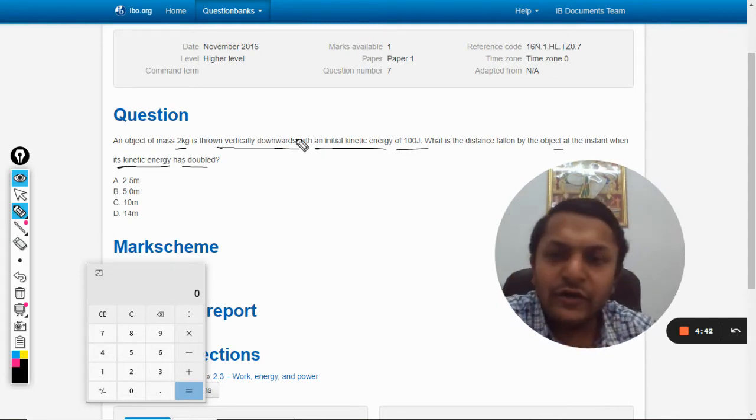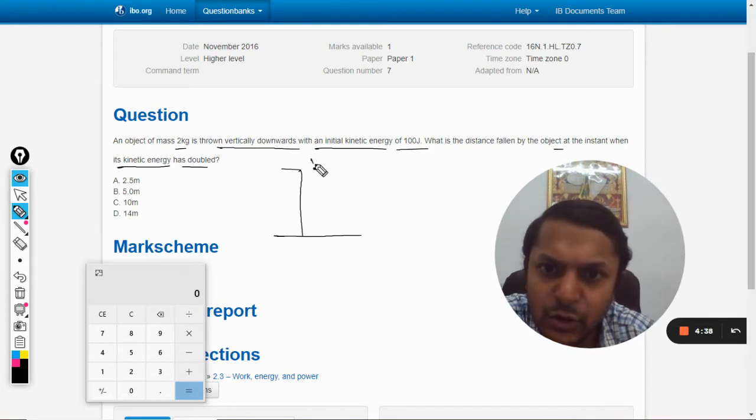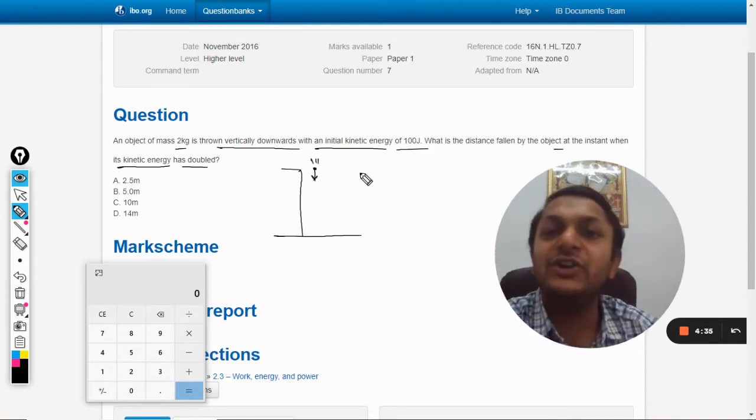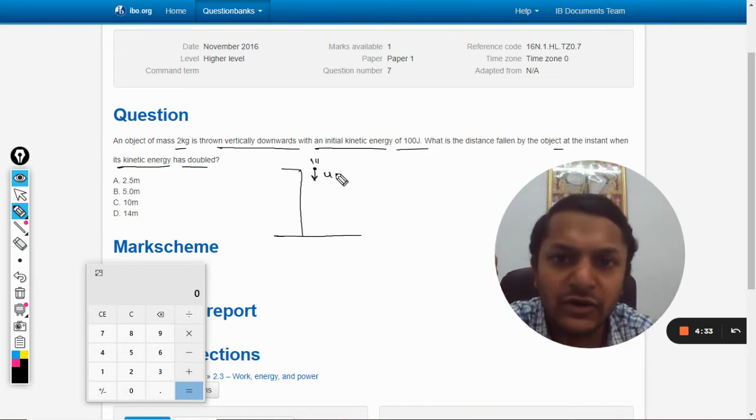Let us say this is the building from which the body has been thrown down. But this time it has not been dropped, so u is not equal to zero.